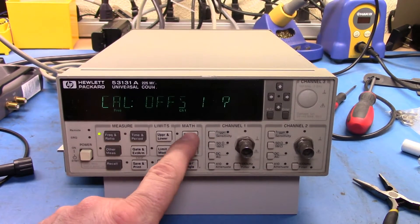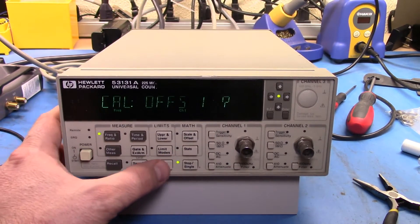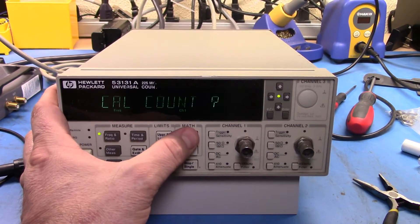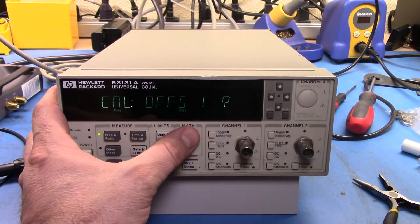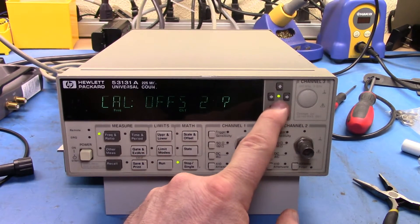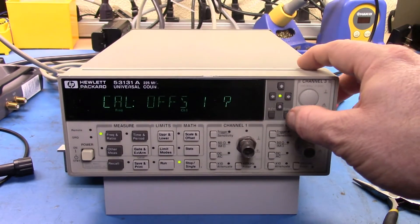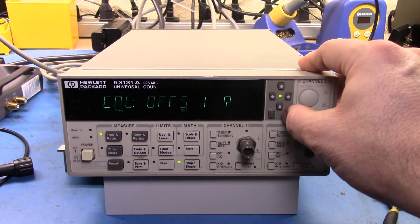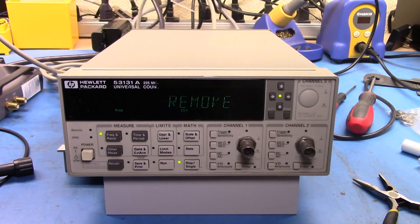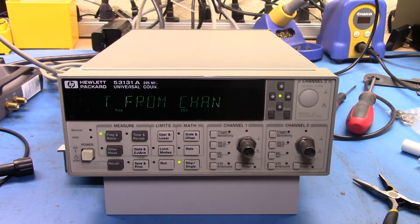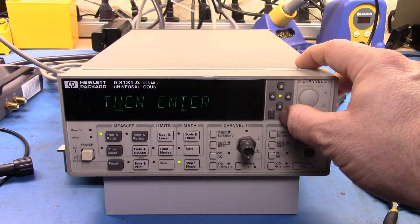So now we can go through and do the offset. So there are a number of different calibration settings. And we can go through and do all of those. So we'll start off with offset 1. So remove the inputs from channel 1 and then press enter.